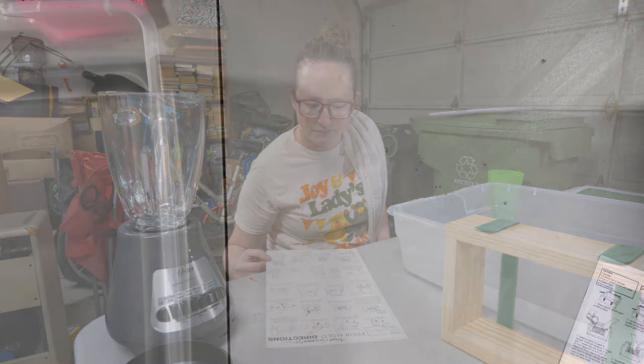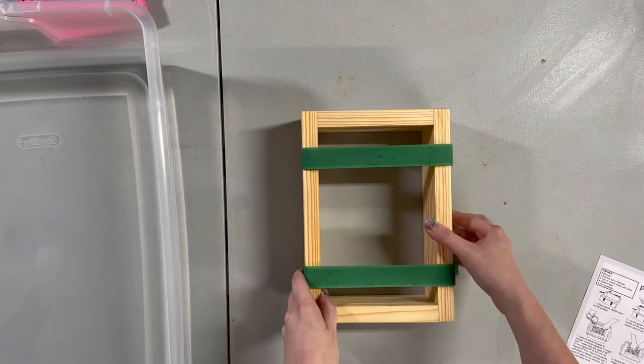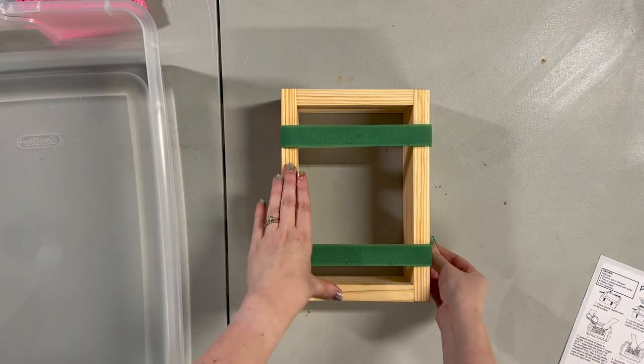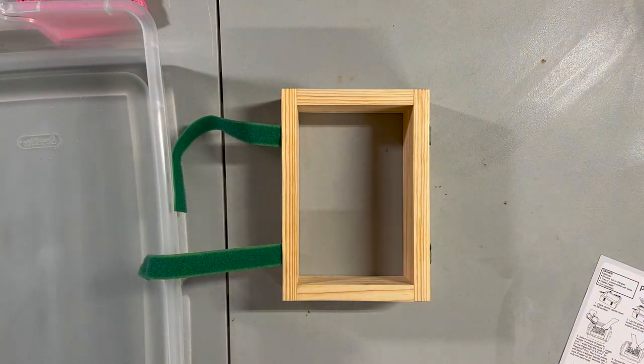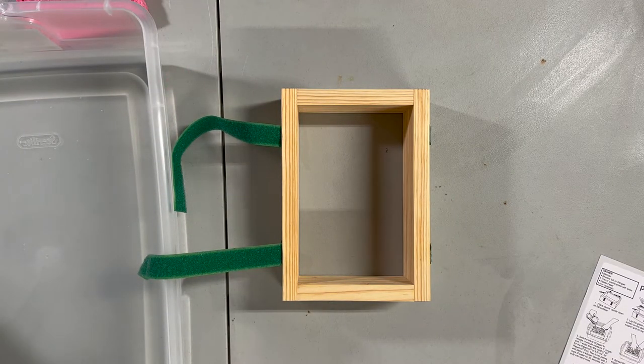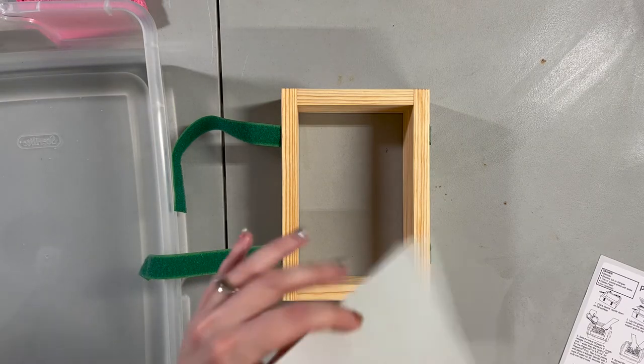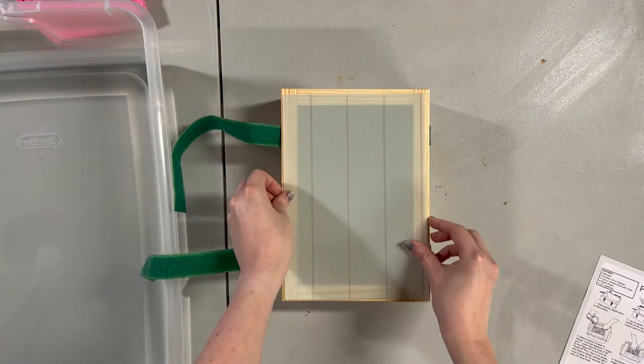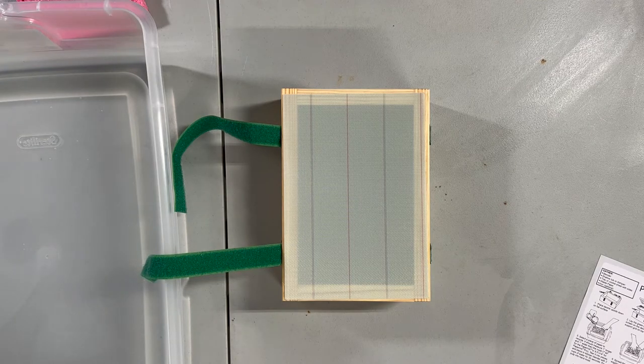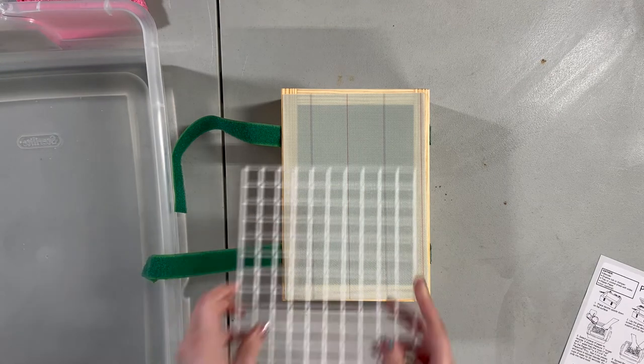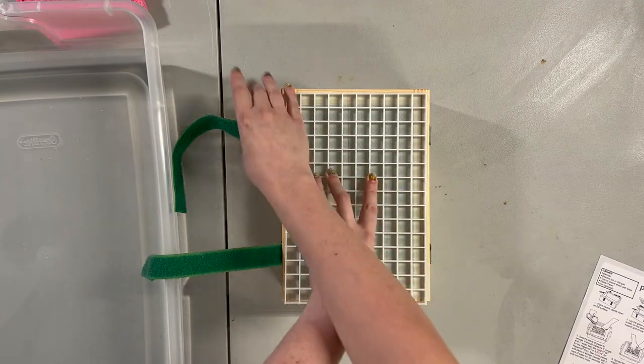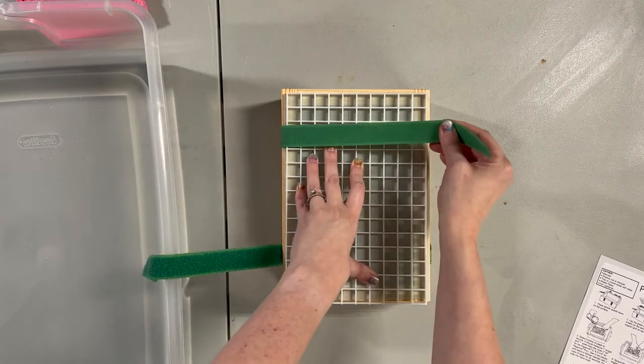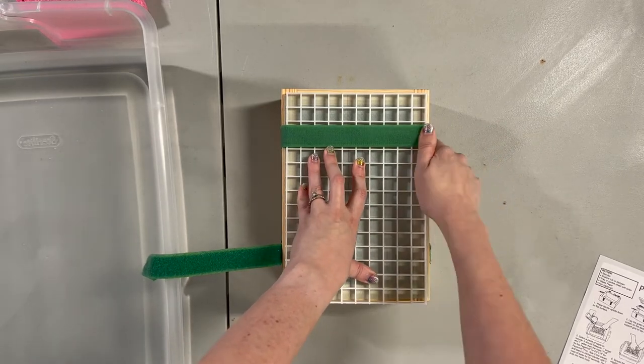So the first step in the instructions is to put the deckle all together. You start it upside down, undo the straps, and then put the green paper making screen down first and then the support grid on top of that. Then it says to pull the straps across the support grid as tightly as you can.